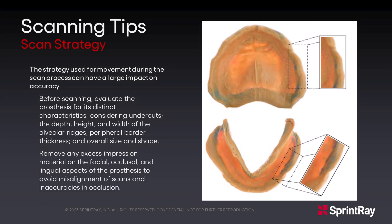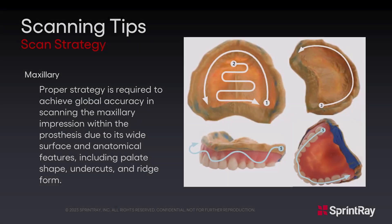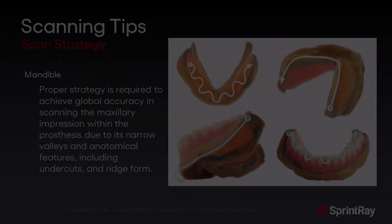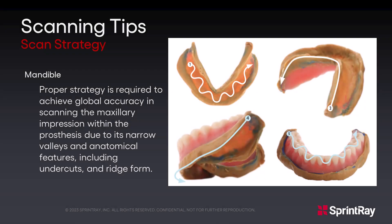The strategy used for movement during the scan process can have a large impact on accuracy. Please be aware of anatomical features and potential challenging areas before proceeding with the scanning steps. For the maxillary denture, follow the recommended scan strategy to ensure that the palate as well as the undercuts and ridge form are accurately captured. The lower denture will also have a particular scan strategy to ensure all data is captured from the undercuts and ridge form.